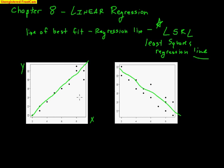A residual is also called error, but not in a bad way — it's error in the sense that it's off. For example, this point right here is a little bit away from the line. I'm going to put a pink dot on the line — that represents a predicted value. The black dot there is an actual value. The distance in between is what we call error, or a residual — how far you are from what you were predicted.